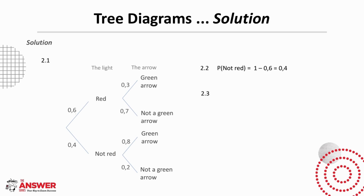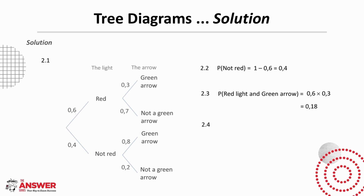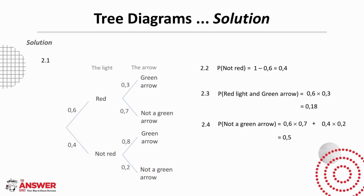For 2.3, the probability of getting a red light and a green arrow — we find that by finding the product of the probabilities: 0.6 times 0.3, which equals 0.18. For 2.4, the probability of not getting a green arrow — there are two pathways that give us this outcome, so we must find the product of the probabilities along each pathway and add them together: 0.6 times 0.7 plus 0.4 times 0.2, and this gives us 0.5.